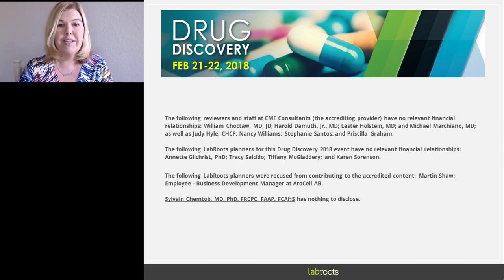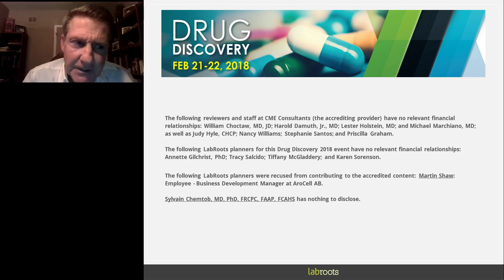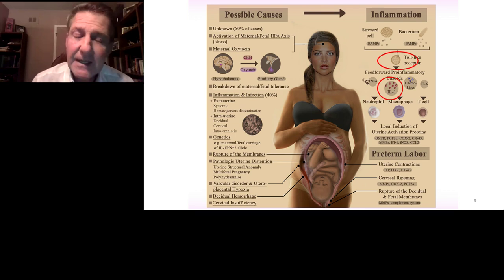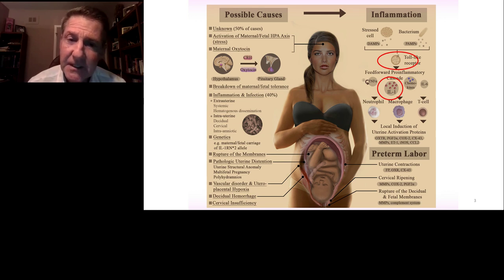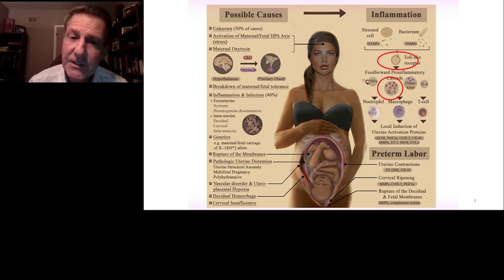I will now turn the presentation over to him. Welcome sir. Good day everyone. My name is Sylvain Shemtaub and I will be talking to you about prematurity and labor and adverse outcomes. Prematurity is a major cause of disability later on in life. Approximately 15 million children are born premature in the world. 1.1 million of these die unfortunately. In the United States alone, the cost of prematurity amounts to approximately 40 billion dollars a year. And so far in the last 30 years, the rate of prematurity has essentially not changed at all.